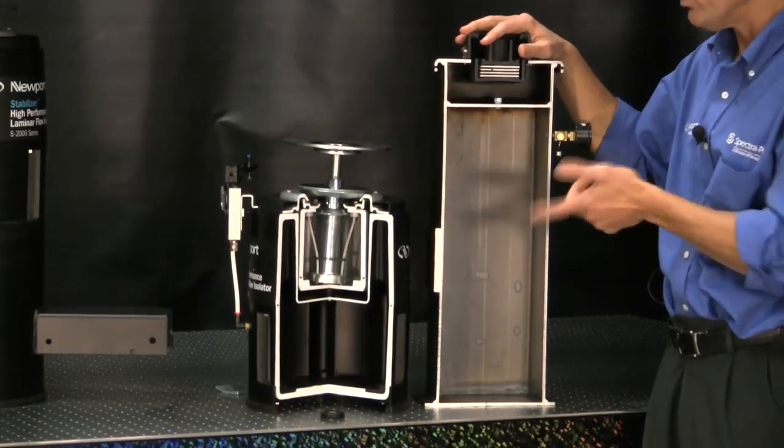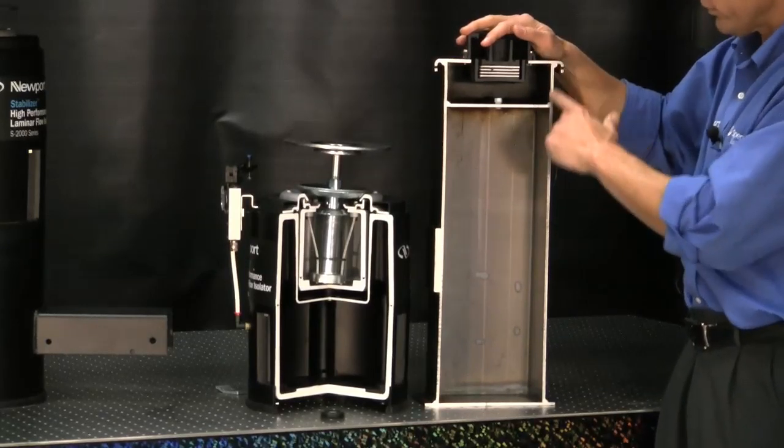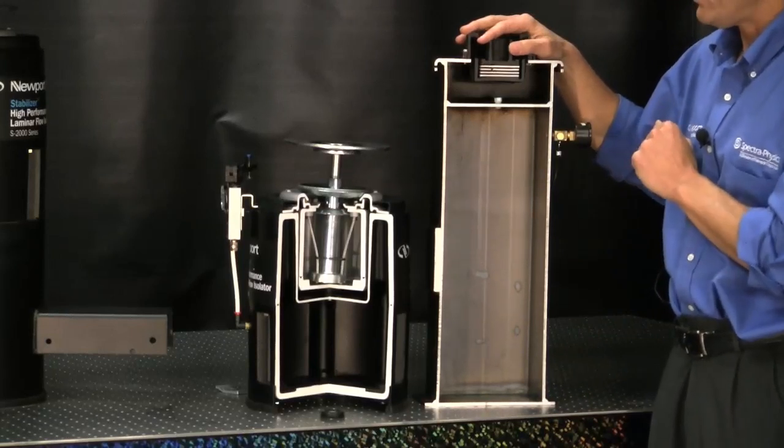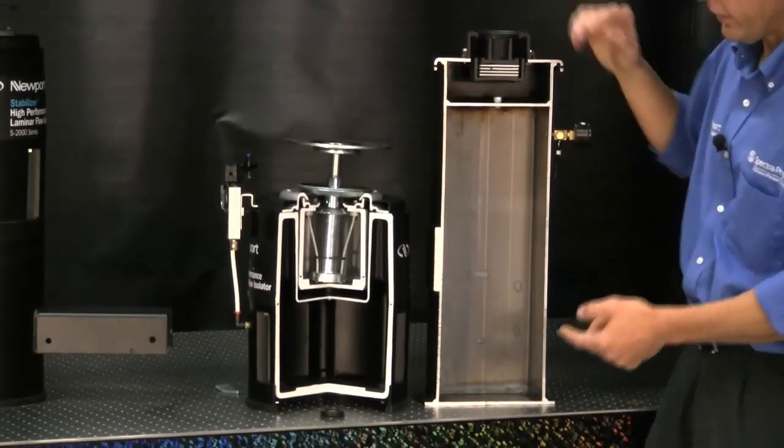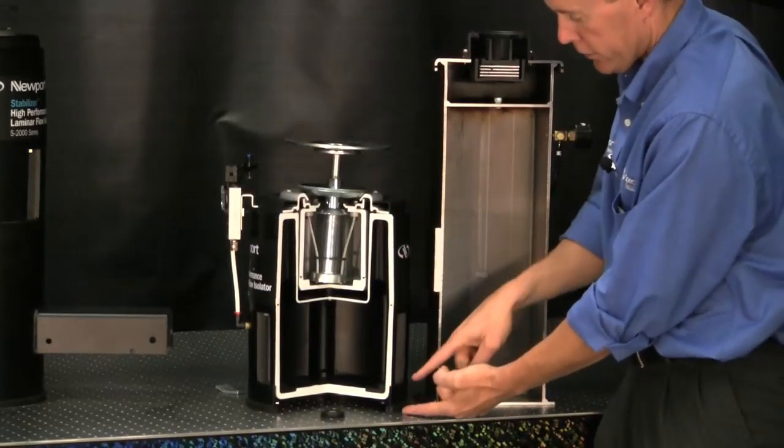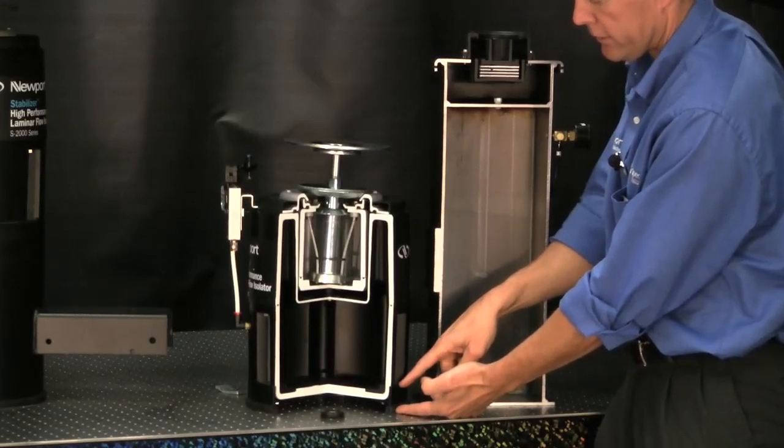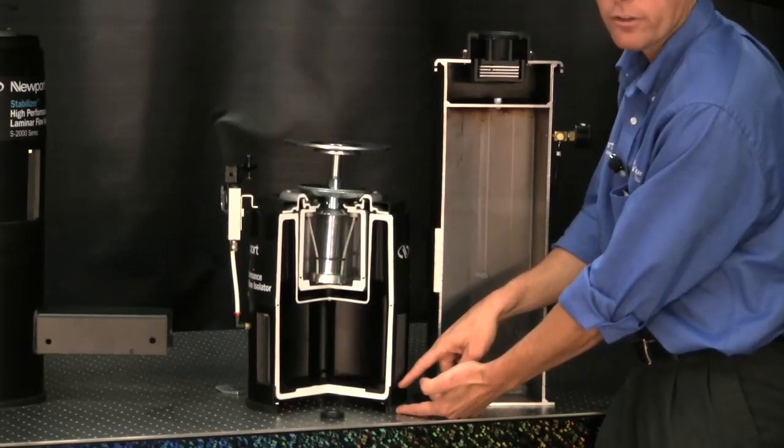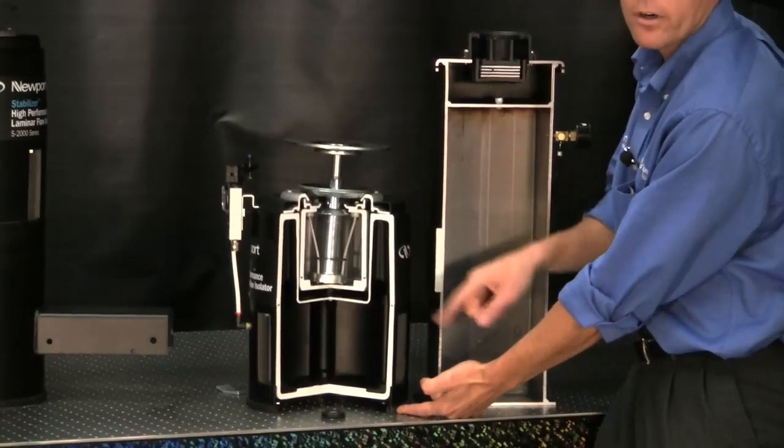One other feature that Newport isolators have that this competitive model doesn't is this is a solid steel welded tube. If you buy this height today, that's the height you're going to live with tomorrow. On the Newport isolator, this top piece here is the isolator. This bottom piece is a spacer to provide the working surface that you need. This spacer can be changed out in the field by a customer to make it higher or lower depending on what their needs are.